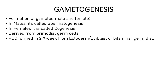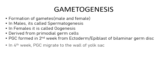These primordial germ cells are actually formed in the second week from the ectoderm — or the epiblast. You have the bilaminar germ disc which further develops into the trilaminar germ disc, and that is under gastrulation, which is another topic for another day. So the primordial germ cells are formed in the second week from these two plates.